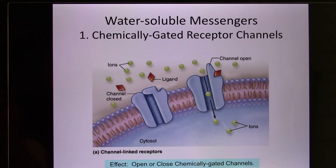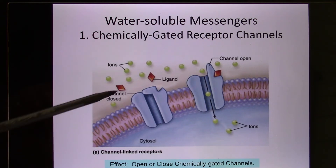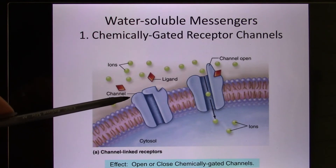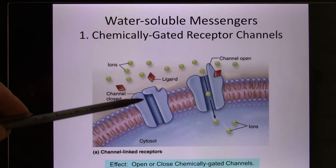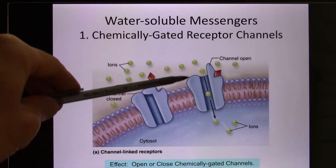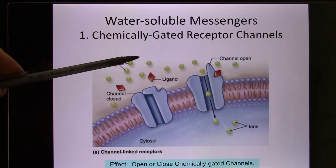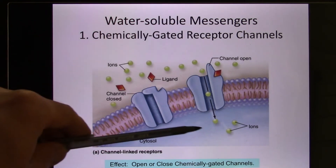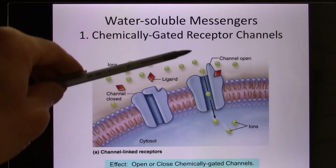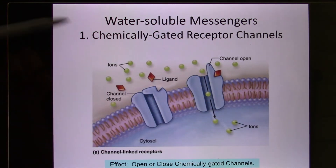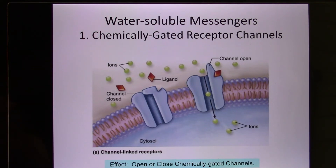The first category is channel receptors. Many neurotransmitters belong to this category — they bind with the receptor, and the receptor is an ion channel. When it binds, it opens the ion channel. Usually it's sodium, which is high outside and low inside, so it flows through the sodium channel and moves inside. This changes the voltage inside the cell. We call this a ligand-gated or chemically-gated receptor channel.